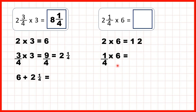Again, remember when we're multiplying a fraction by a whole number, we only multiply the numerator and the denominator stays the same. So 1 times 6 is 6, the denominator stays at 4, but now we have 6 quarters.